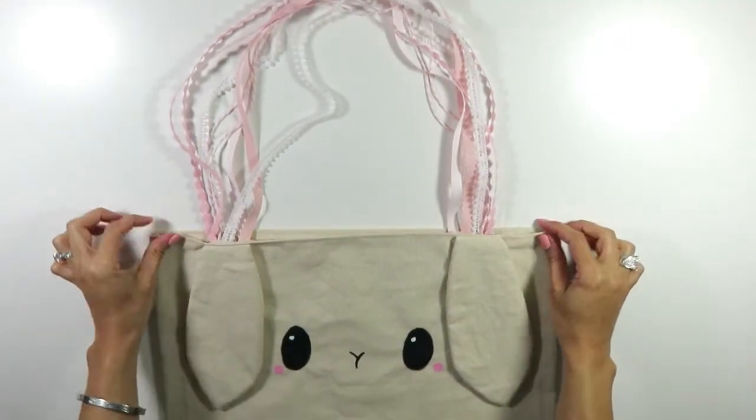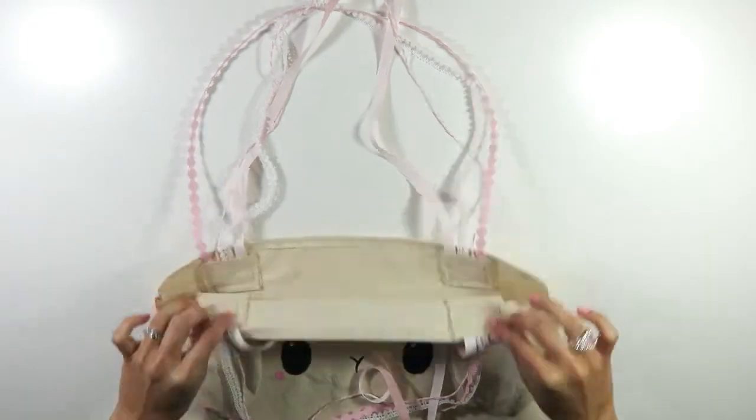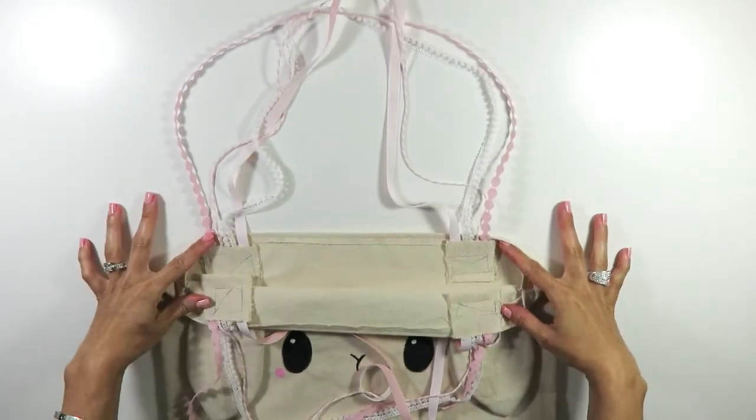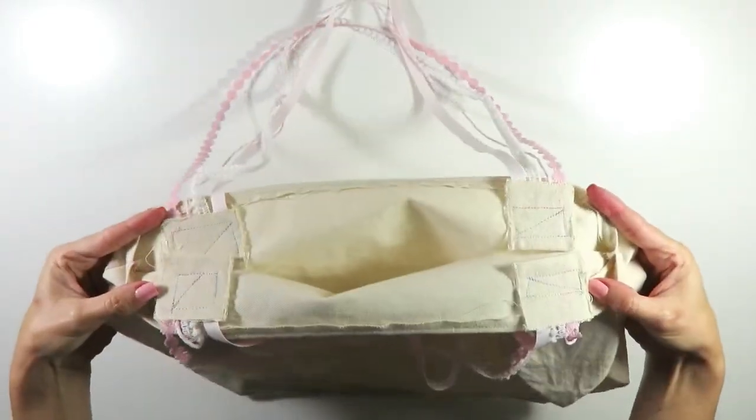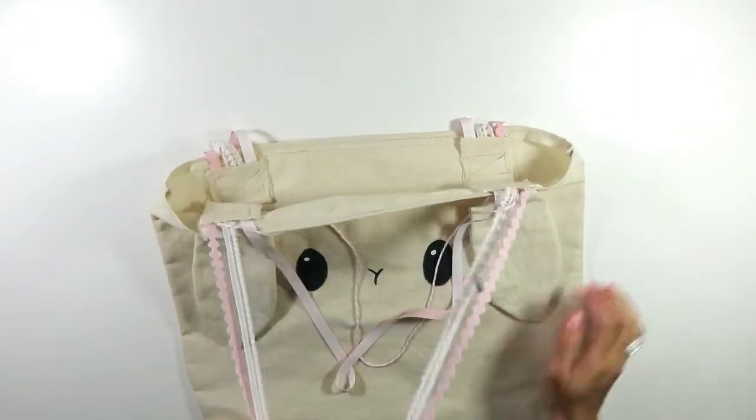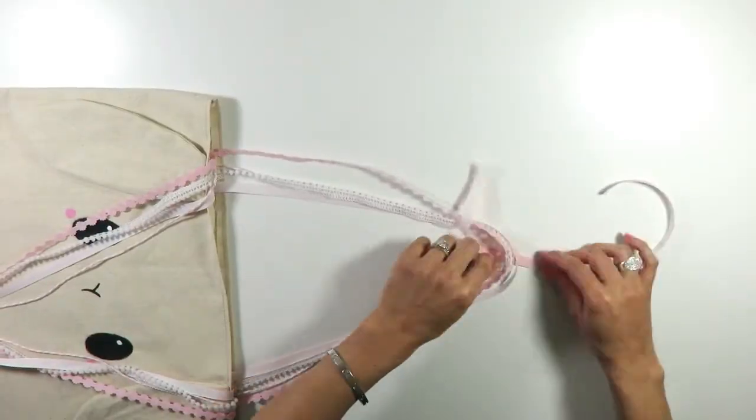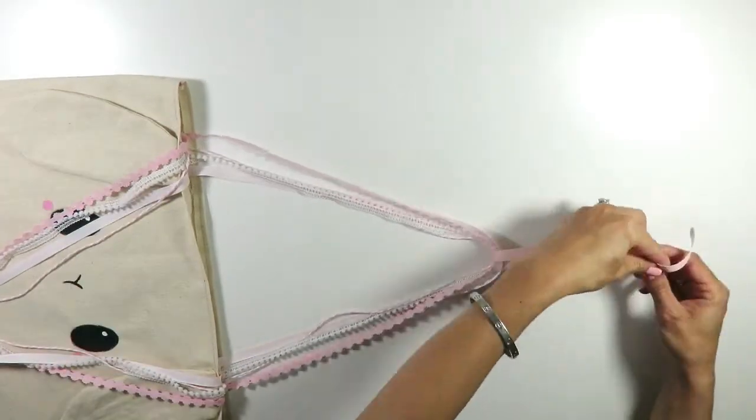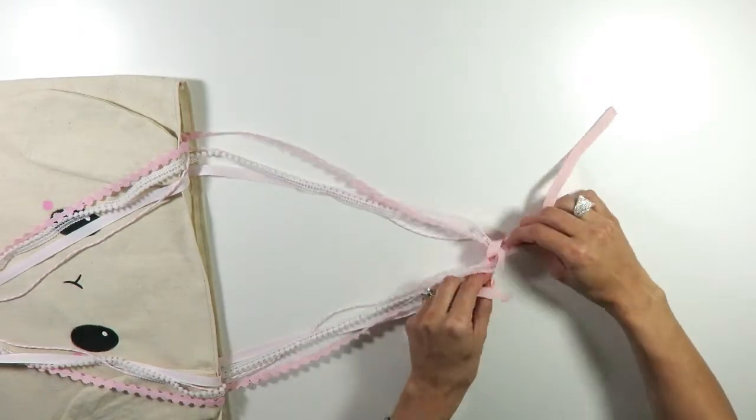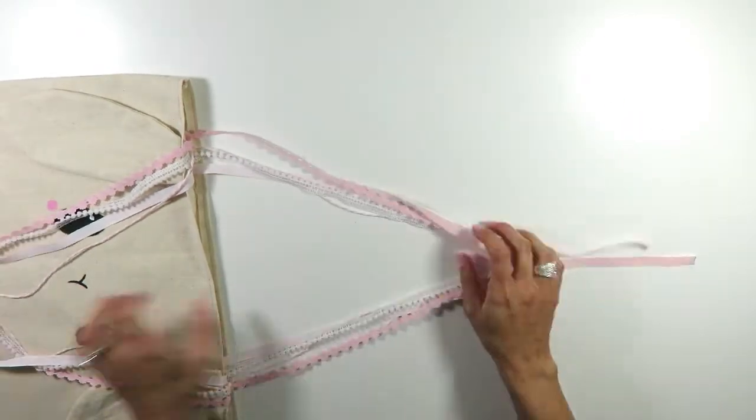This tote bag turned out so cute, I am totally going to use it. So to make it more secure and durable I attached four little squares of fabric on top of the ribbon just to give them extra strength. And the last thing I did was to tie each group of ribbons together to really separate the straps.